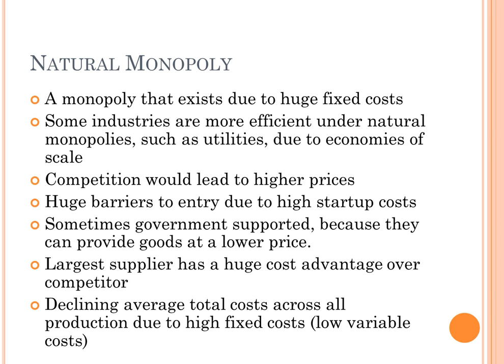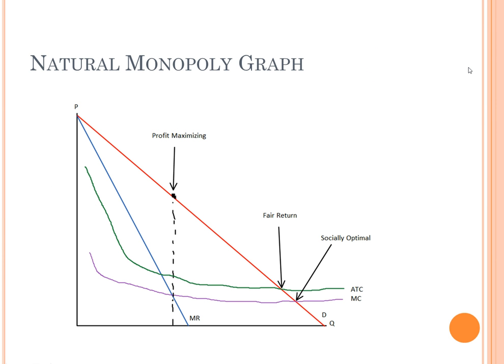The most important thing to remember about a natural monopoly is that the average total cost is always decreasing, and the marginal cost is less than the average total cost at all points. This is because the huge fixed costs are spread over a large output, and the variable costs are insignificant compared to the fixed costs. This graph shows that the average total cost is always decreasing — notice how it starts really high but just keeps decreasing. Since marginal cost is below it, it's just going to keep decreasing. The demand is downsloping just like a regular graph, and the same with the marginal revenue. The monopoly will produce at MR equals MC, but this results in an extremely high price and low output.